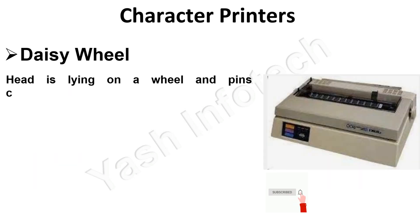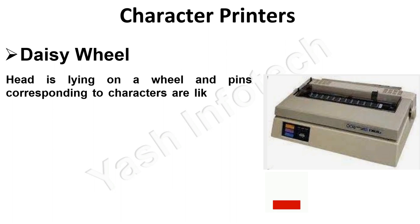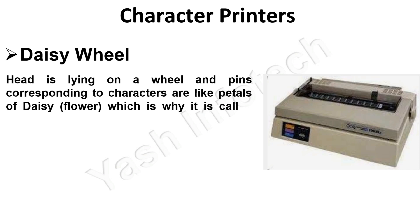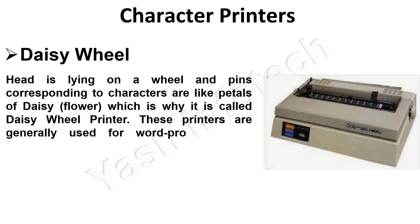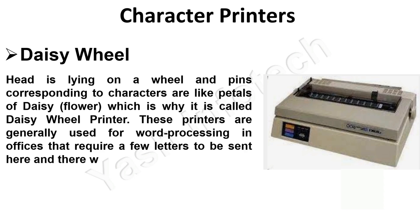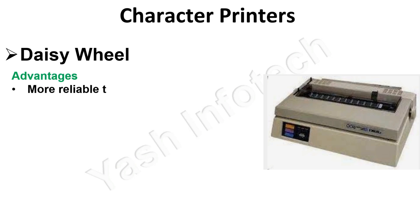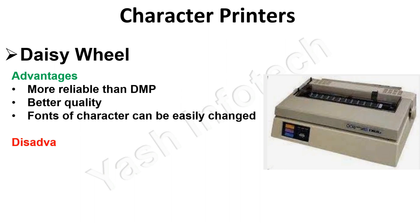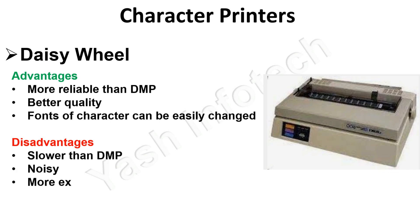Daisy wheel: the head is lying on a wheel and pins corresponding to characters are like petals of a daisy flower, which is why it is called a daisy wheel printer. These printers are generally used for word processing in offices that require a few letters to be sent with very nice quality. Advantages: more reliable than dot matrix printer, better quality, and fonts of characters can be easily changed. Disadvantages: slower than dot matrix printer, noisy, and more expensive than dot matrix printer.